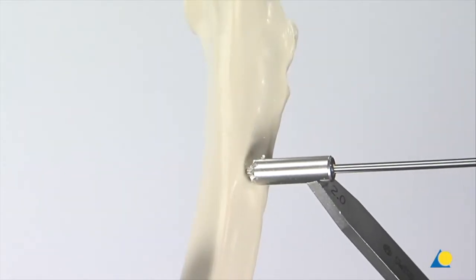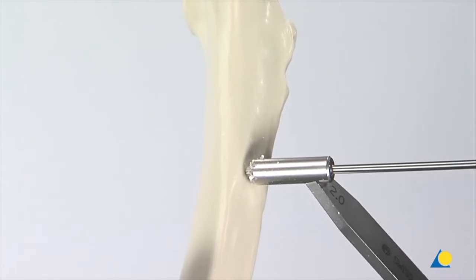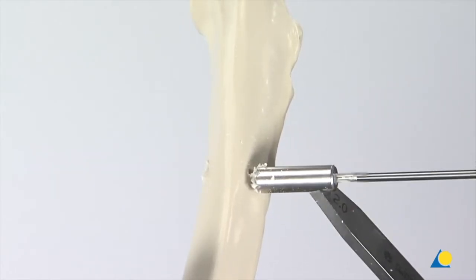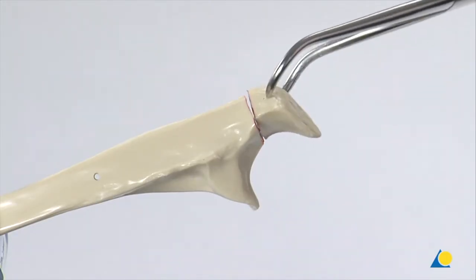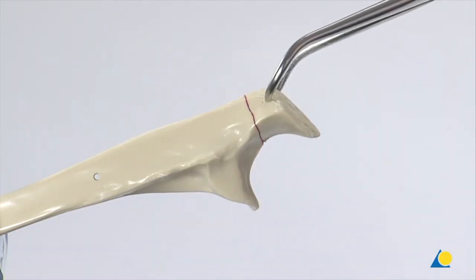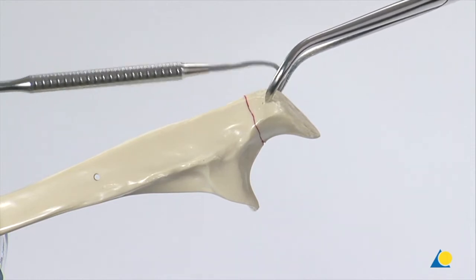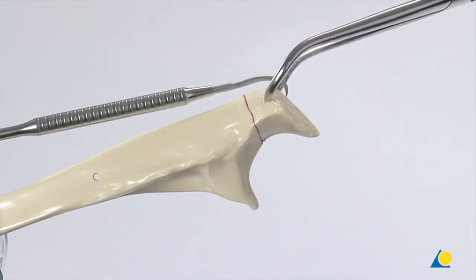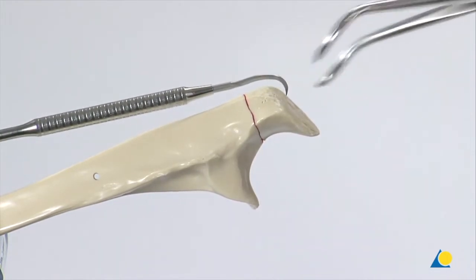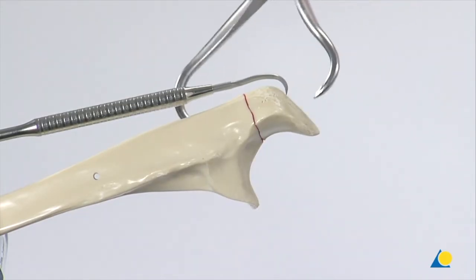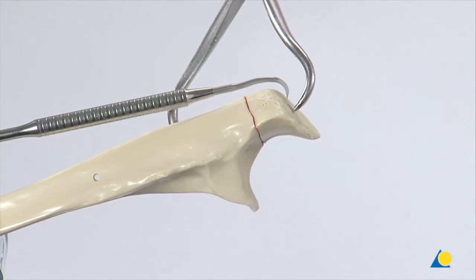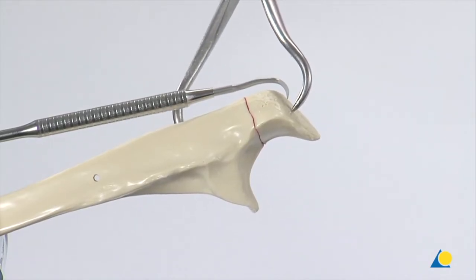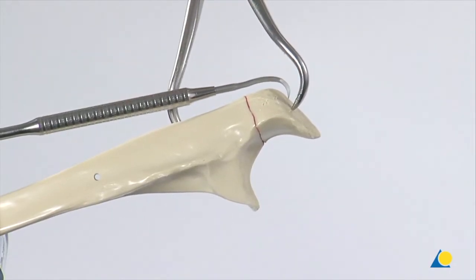The fracture is reduced with the large pointed reduction forceps. The fragment is held in the reduced position using the sharp hook. The forceps is then applied to the reduced fracture, making sure not to block the later insertion site of the K-wires. The hook is now removed.